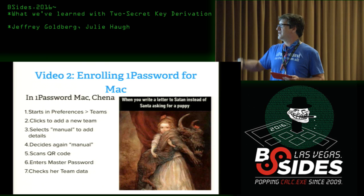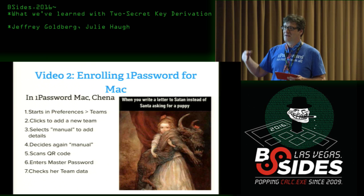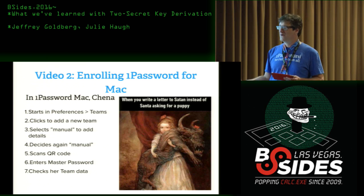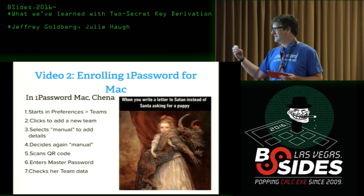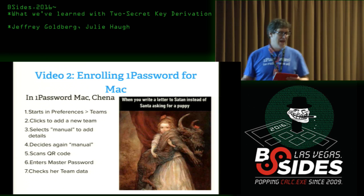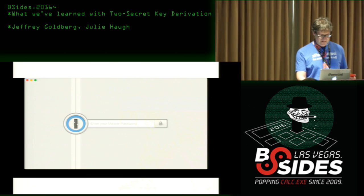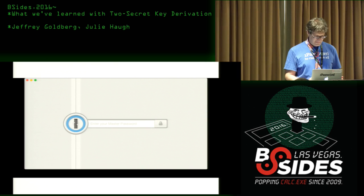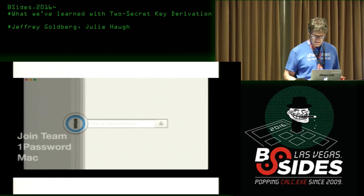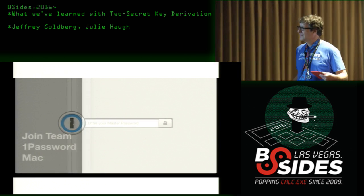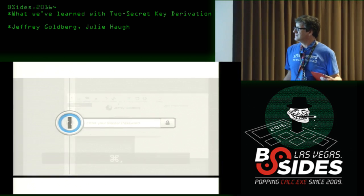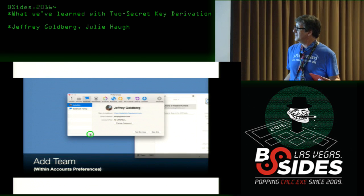She's going to set this up in 1Password for Mac. She goes to Preferences, selects to add a new team. She's first going to try the hard way, give up on that, and do it the easy way. Then we'll see she has the vaults from her team — she's joining using 1Password for Mac.